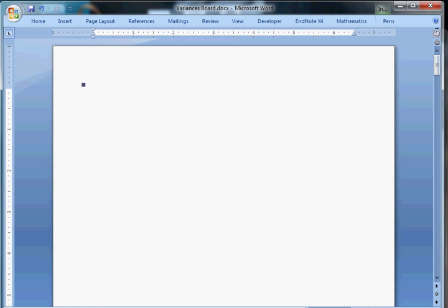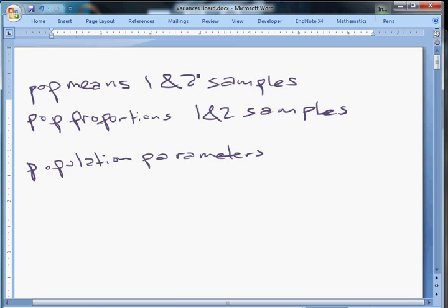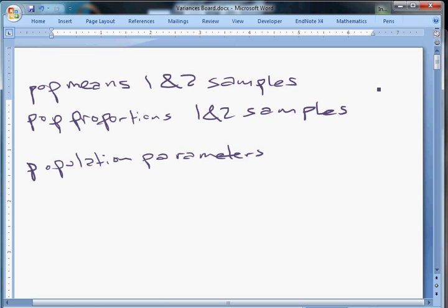So far what we've looked at is population means, one and two samples, and we've looked at population proportions, one and two samples, did some matching stuff. In every case, what we've dealt with is population parameters. That's what we care about usually. I should zoom in probably. This is kind of messy, still working on my handwriting. So we looked at mu, those are the means. We looked at p, that's a population proportion, mu and p.